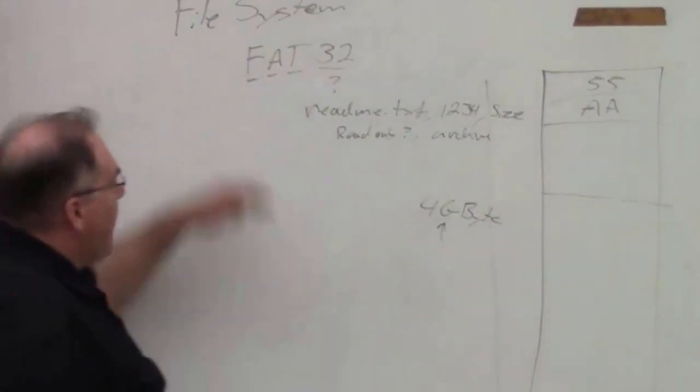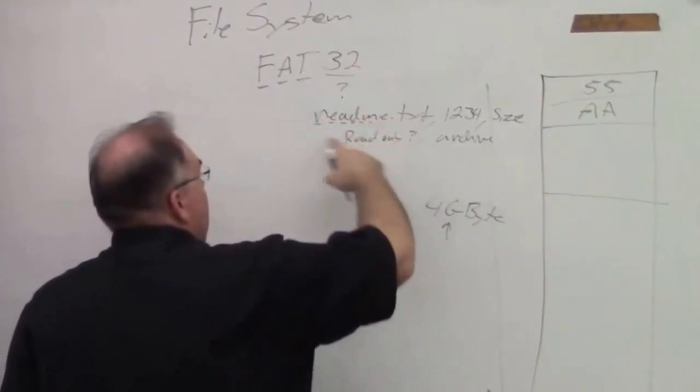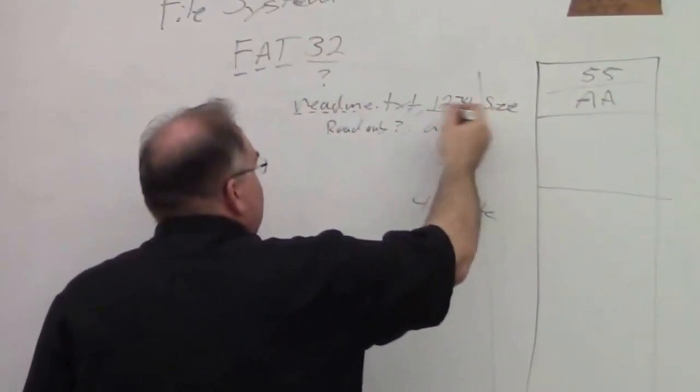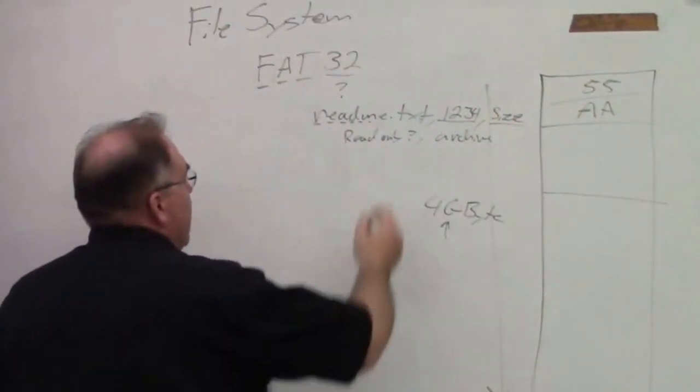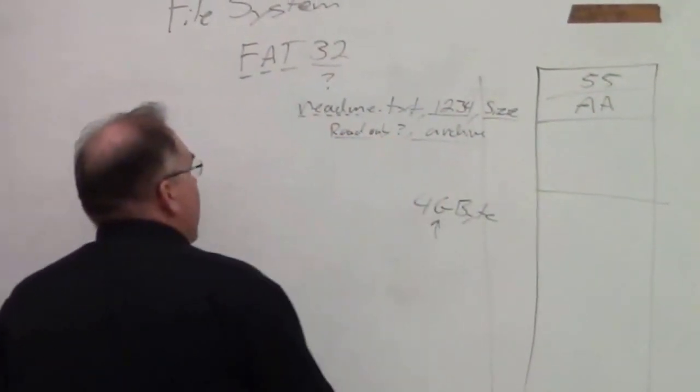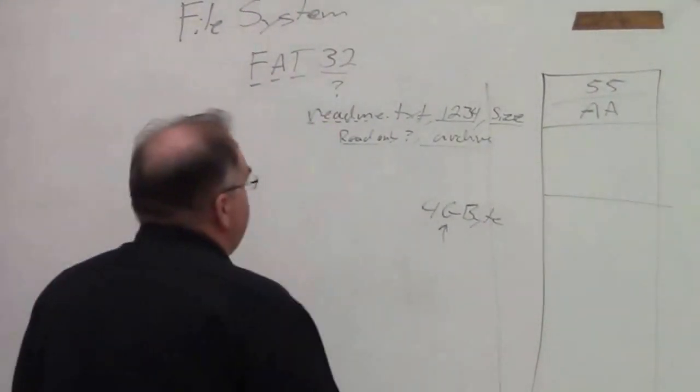So the file allocation table, these are going to be ASCII characters, and maybe this is stored in binary, and the size might be stored in binary, and all this other stuff is probably stored in binary, and there's some other information in the file allocation table.